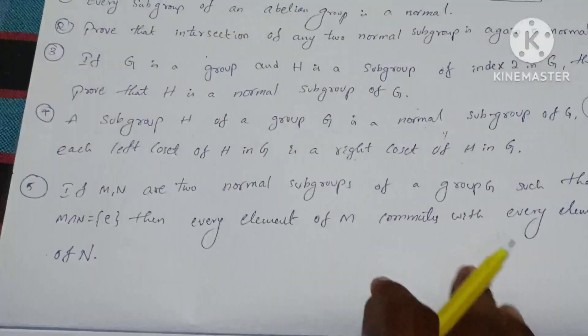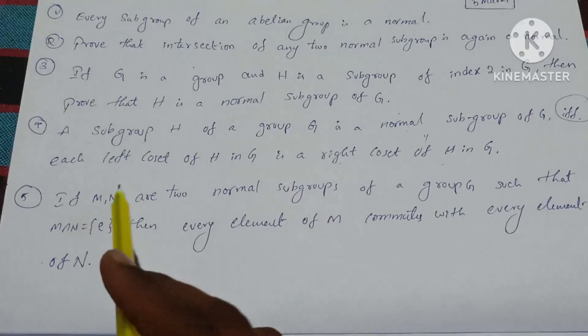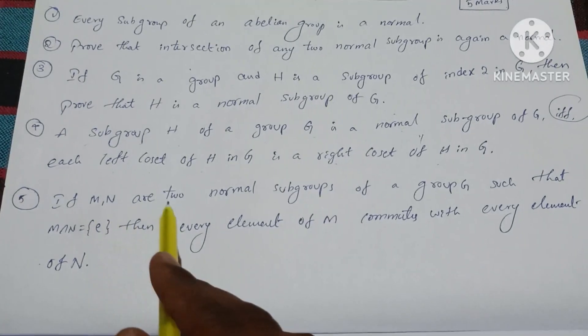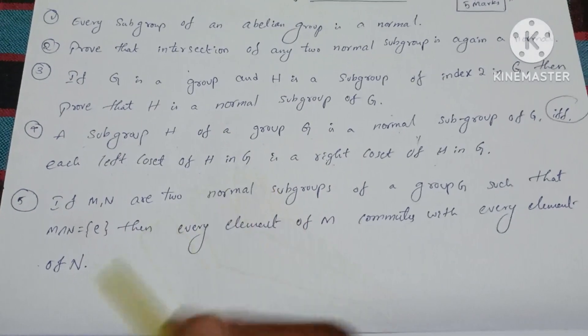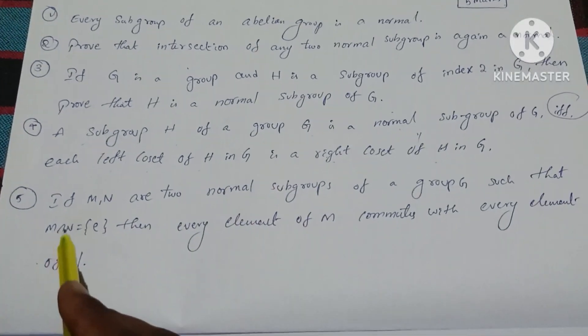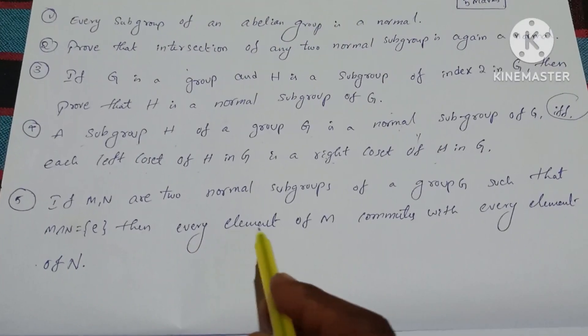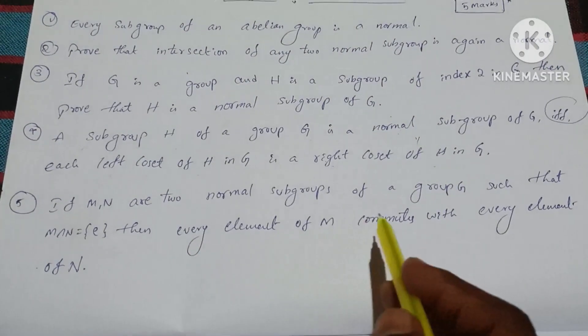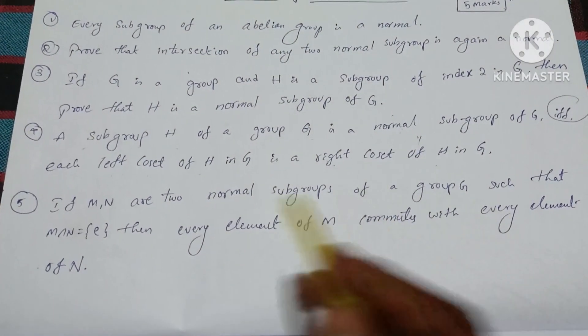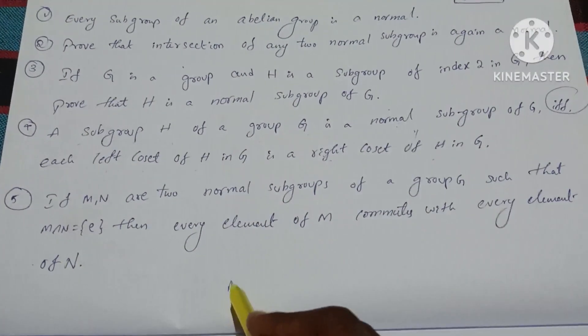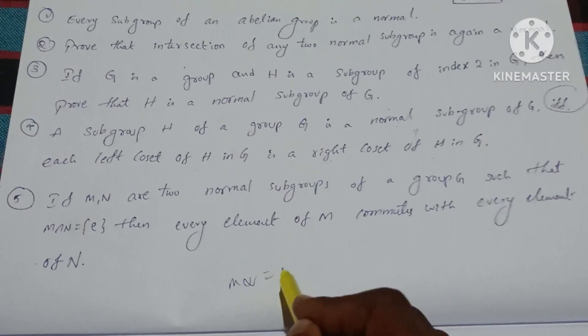Fifth question: If M and N are normal subgroups and M intersected with N equals the identity element E, then every element of M commutes with every element of N.